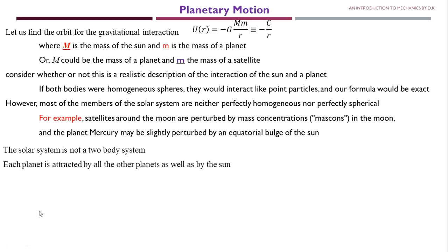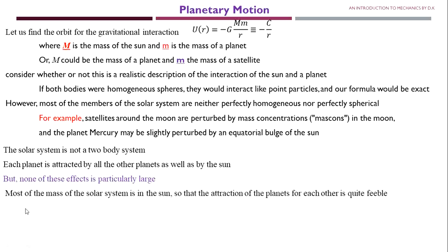Now, the solar system is not a two-body system. Each planet is attracted by all other planets as well as by the Sun. For example, in the case of a group of charges, there is some attraction between the charges, and a test charge placed outside will attract to each point charge. Similarly, the point charges also attract each other. In the same way in the solar system, each planet will attract each other in addition to being attracted by the Sun. But none of these effects is particularly large, since most of the mass of the solar system is in the Sun, so the attraction of the planets for each other is quite feeble.